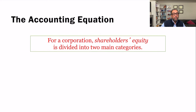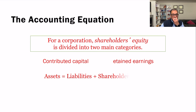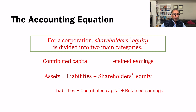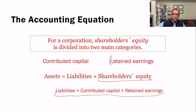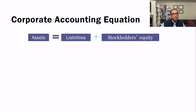Assets equal liabilities plus shareholders' equity. We can expand this equation by breaking down shareholders' equity into its two components: contributed capital, which we call common stock, plus retained earnings. So instead of writing shareholders' equity, we write contributed capital plus retained earnings to expand the accounting equation.